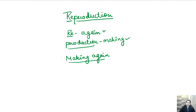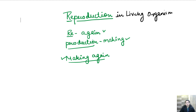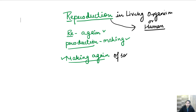So now the question comes: making again — of what? If we talk about reproduction in this chapter, we are talking about the reproduction in living organisms, or our main focus is on humans. Reproduction in humans or reproduction in living organisms. Reproduction ka matlab hota hai 'making again' — making again of the same species.